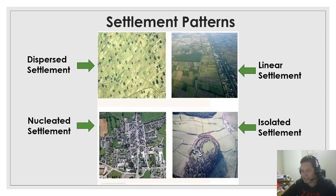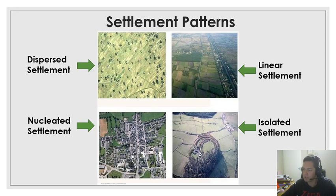Now we look at some of the patterns that we find. These patterns can apply in various ways and are most commonly looked at in terms of map work. The first one on the top left is a dispersed settlement pattern. Dispersed means there are a few farmsteads or homesteads and there's a lot of space between them — so they're not all clustered together, there's a lot of space between them. Those are dispersed.